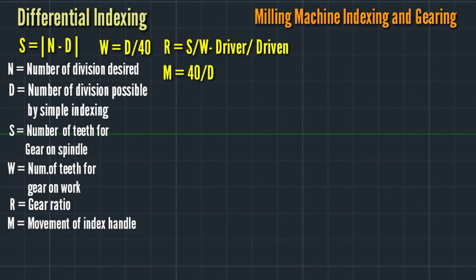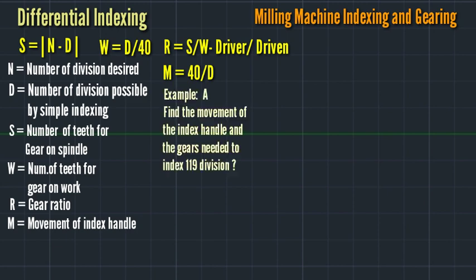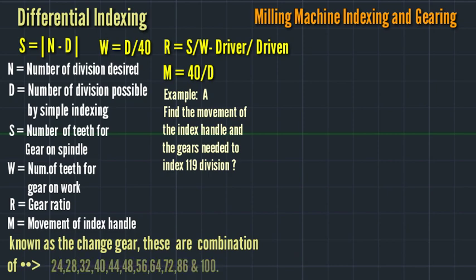Let's proceed to Example A. Find the movement of the index handle and the gears needed to index 119 divisions. Available gears combination: 24, 28, 32, 40, 44, 48, 56, 64, 72, 86, and 100. Here is the solution.